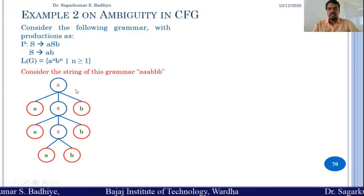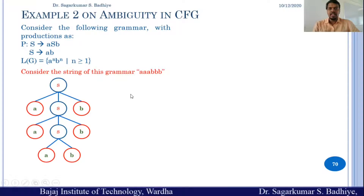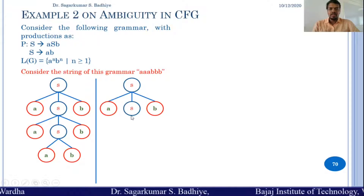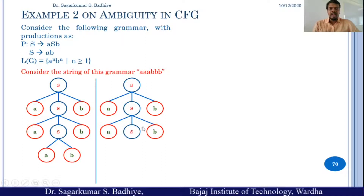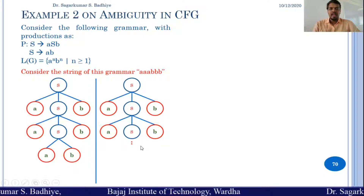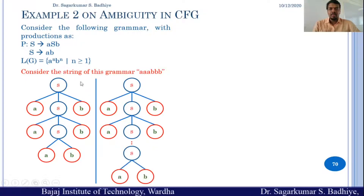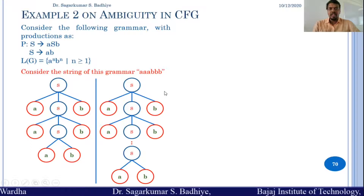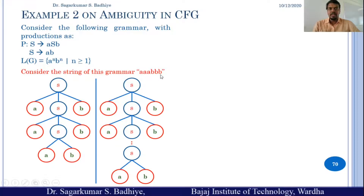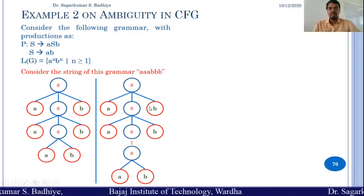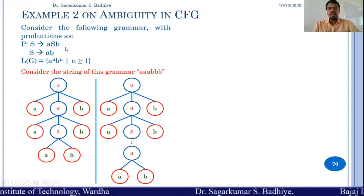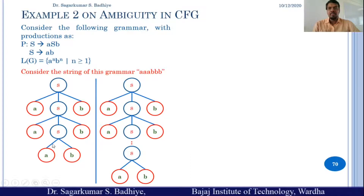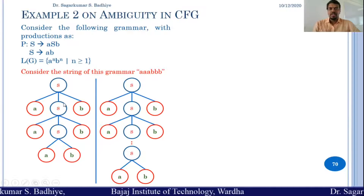More generally, for a string of n a's followed by n b's: s is the root node, it derives to asb; again s is replaced by asb, and this continues up to n−1 times; finally the last s is replaced by ab, generating aⁿbⁿ. Every such string uses only this particular type of parse tree — it is unique for each string, with no alternative production rule expansion. All strings have a single parse tree, so the given grammar is unambiguous.